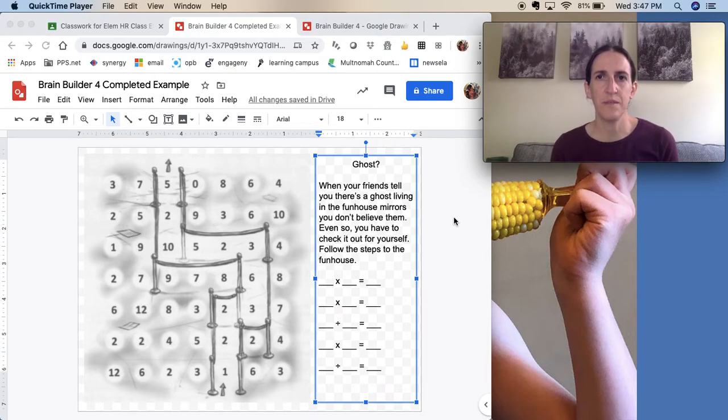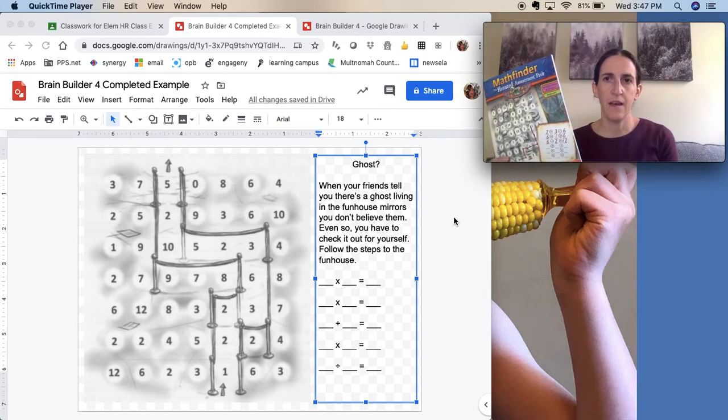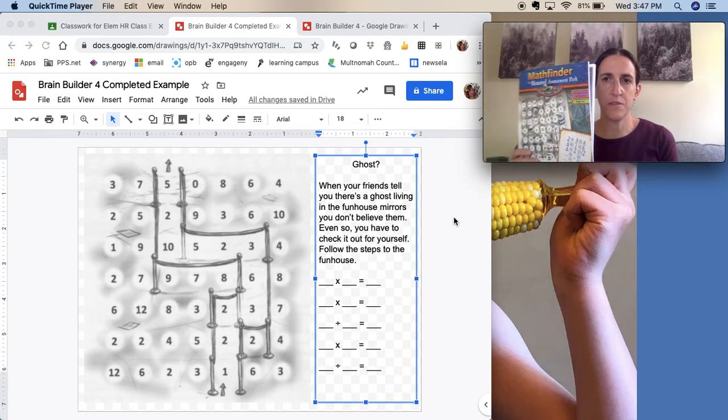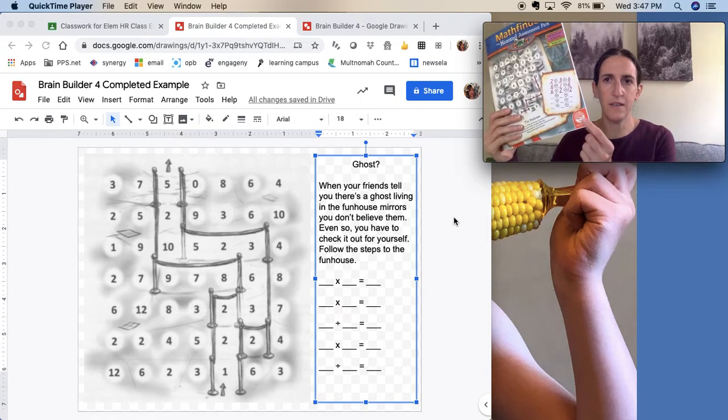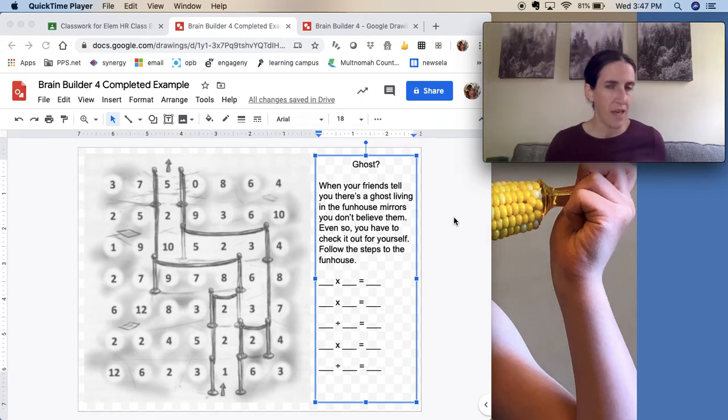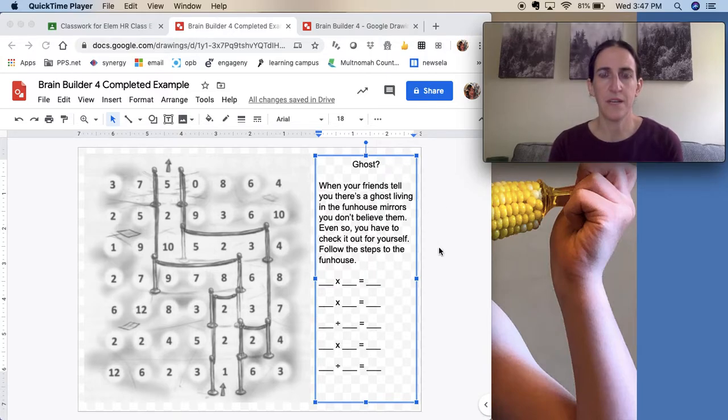For this week's Brain Builder, we're going to do something new. I got another book by the same people who make the other Brain Builders. It's called Math Finder, The Haunted Amusement Park. It's by Mindware, which is where I got these books from. And it's just a little bit different, so I thought it might be fun to do a different kind of challenge.